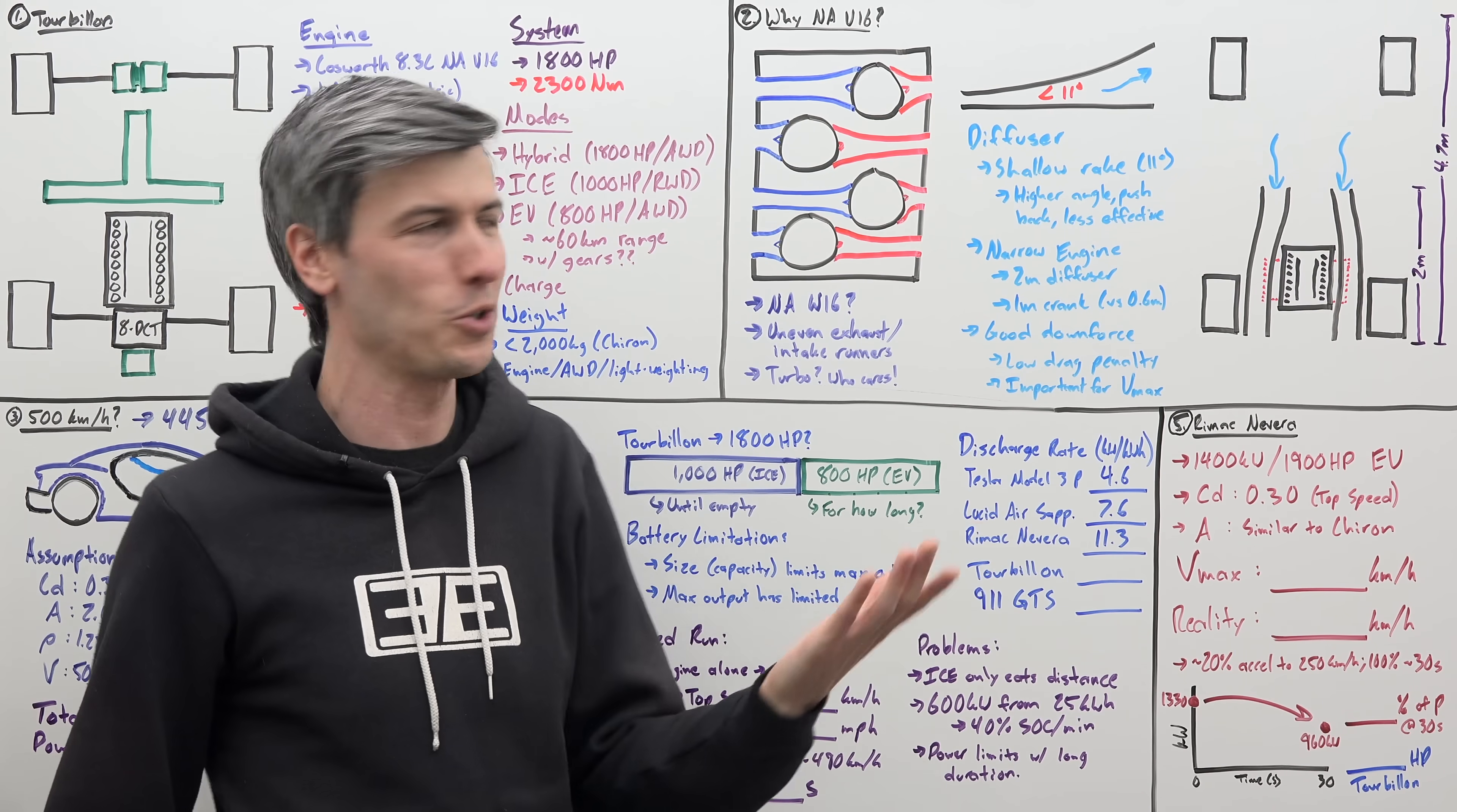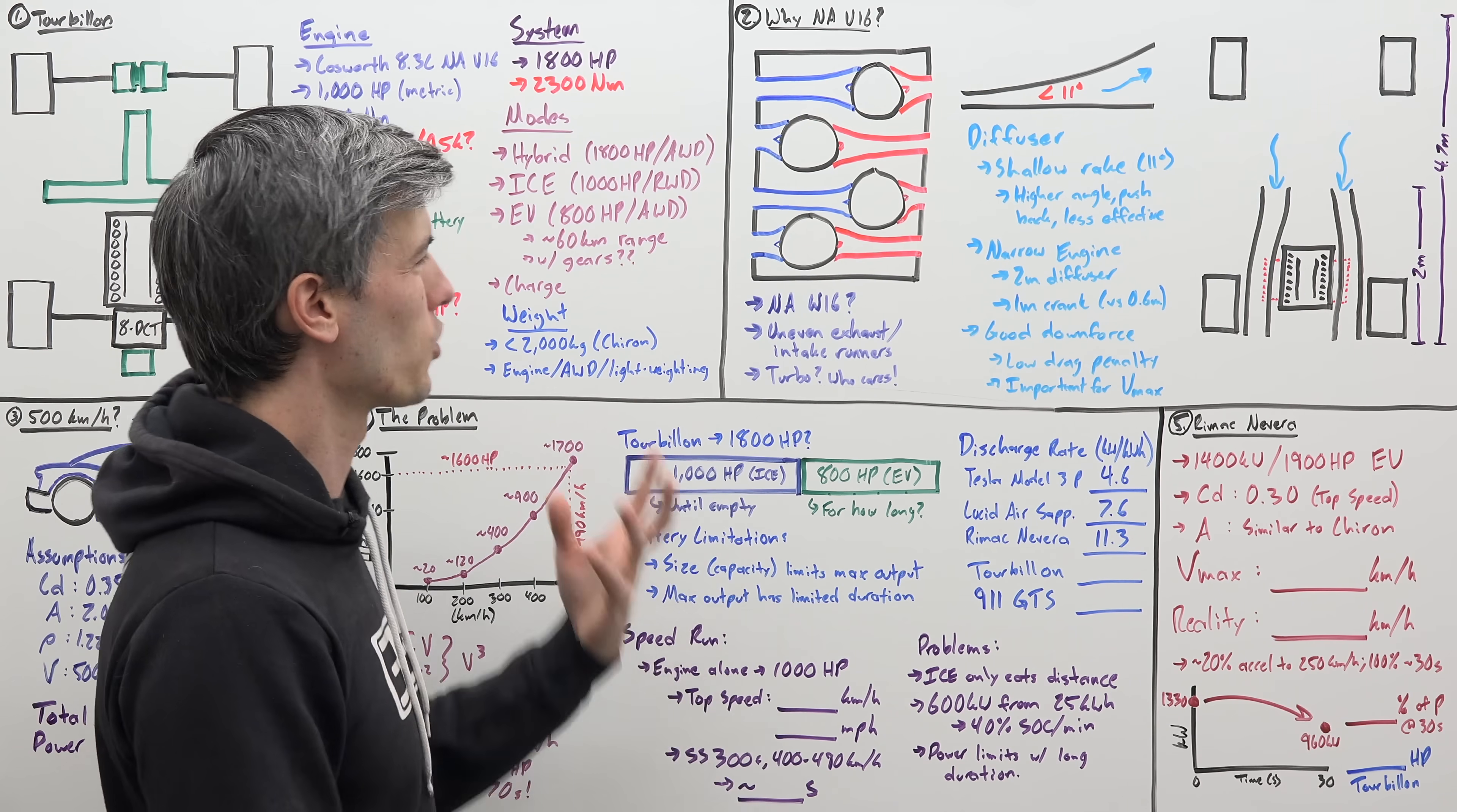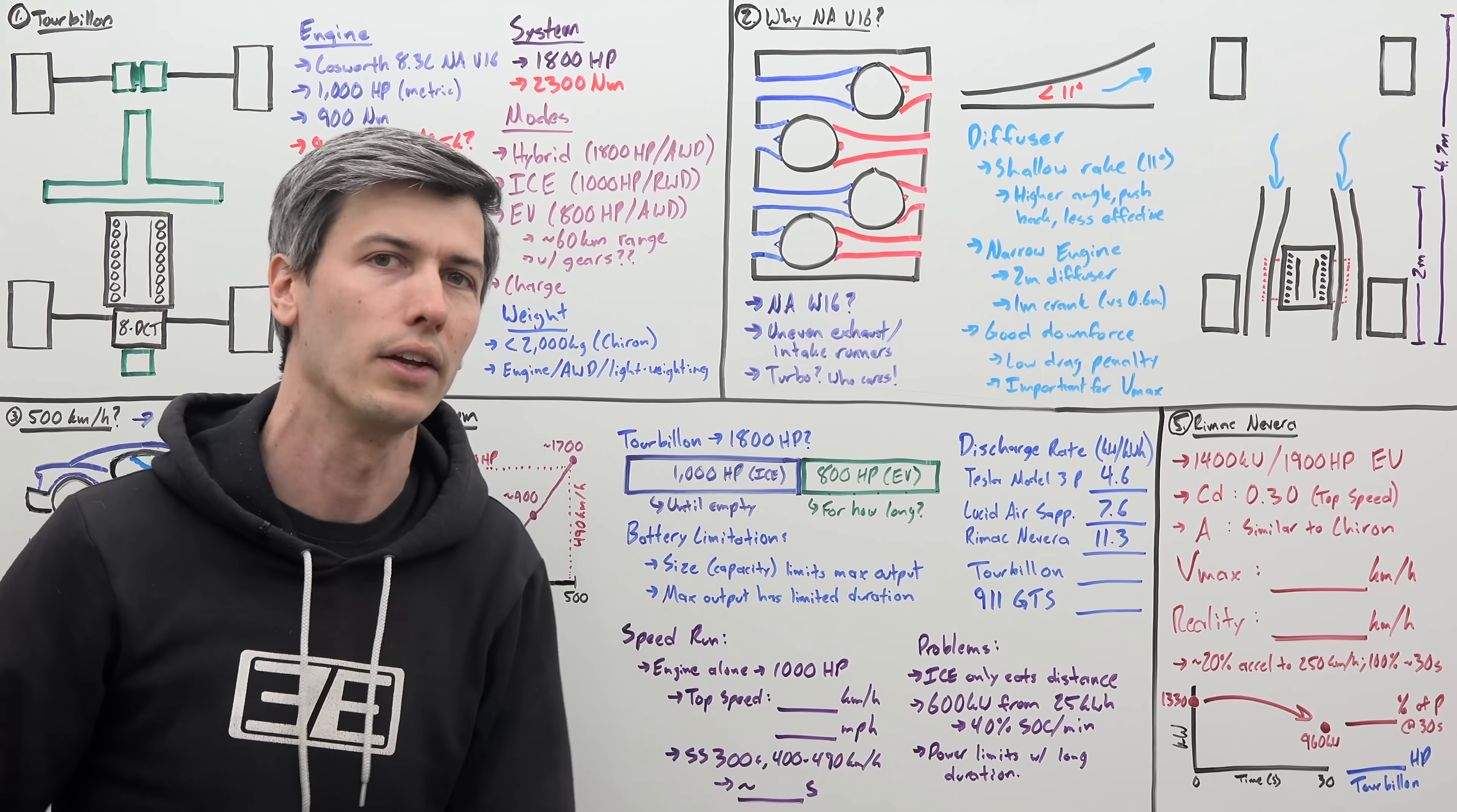So with the Bugatti Chiron, using this was no problem, because you've got turbochargers. So it's kind of a dumb method of forcing in air, where you just have high pressure, and the air is forced to go in, doesn't really care how long that intake runner is.